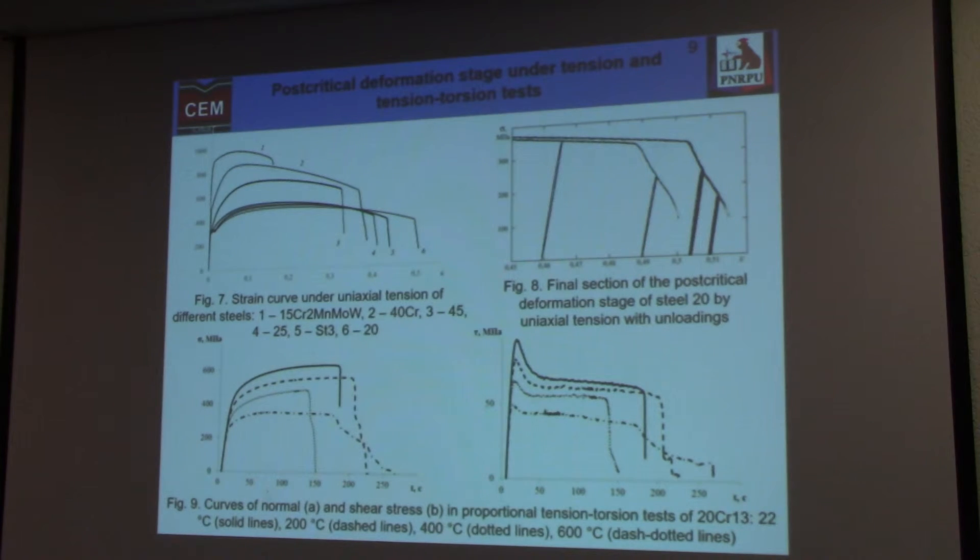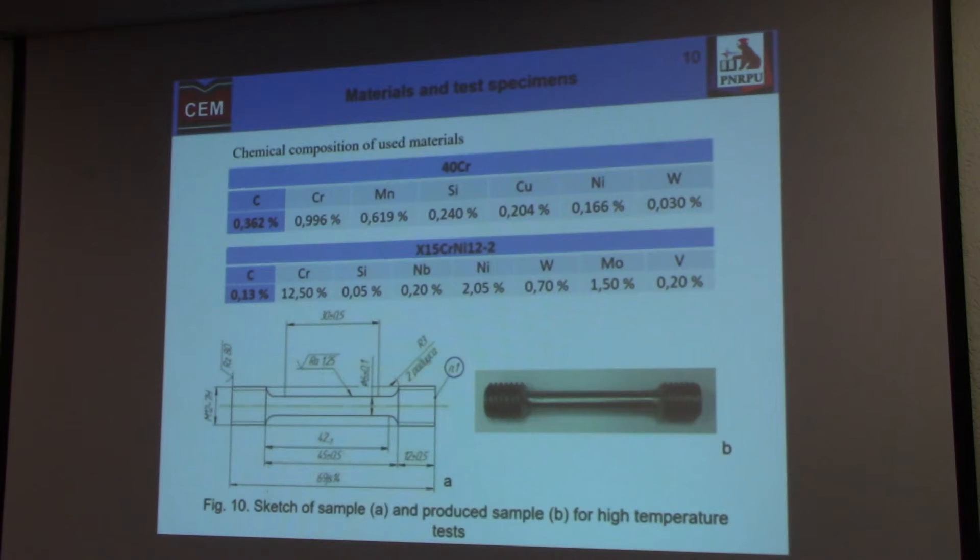We have a lot of test information about post-critical behavior of different steels at room temperature, under tension, in tension-torsion test, at high temperatures, and it's important that all post-critical stages of deformation is stable, because we can stop the process of deformation and realize unloading in each point, in each dose of post-critical deformation stage.